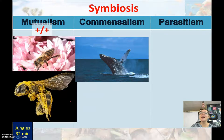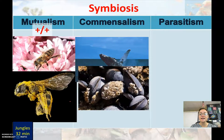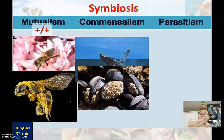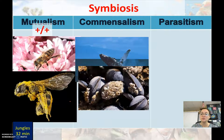In commensalism, one benefits and one is neither harmed nor helped. For example, barnacles attach themselves to the body of a whale. The humpback whale isn't harmed by a barnacle attaching to its skin, but the barnacle benefits because as the whale swims through the ocean, water flows past it bringing nutrients and dissolved oxygen.